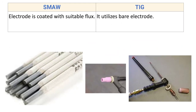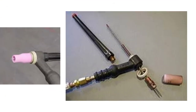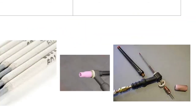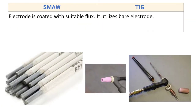TIG utilizes a bare electrode. Here you can see the torch used in TIG welding, and the electrode used for arc generation. The TIG electrode is not coated with any flux.